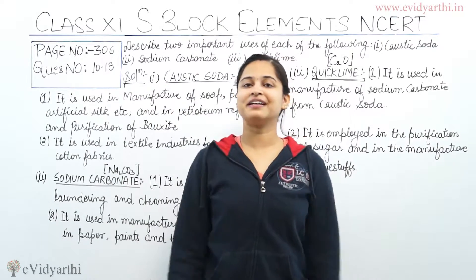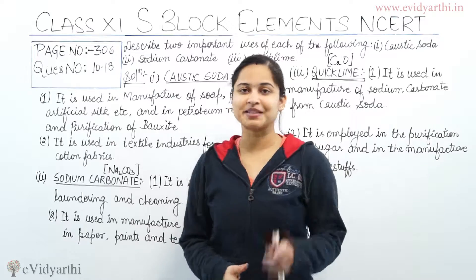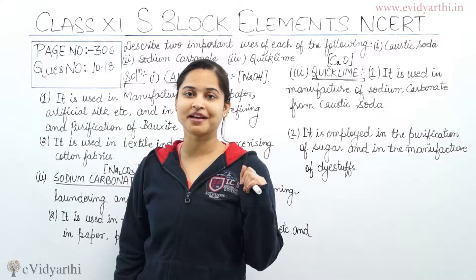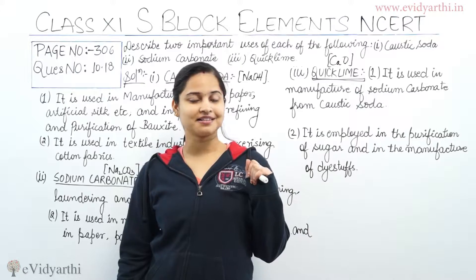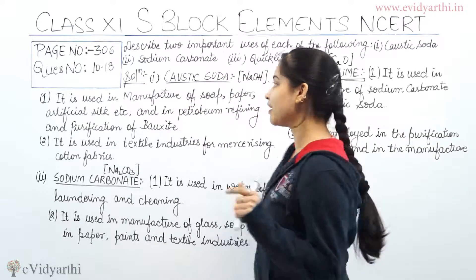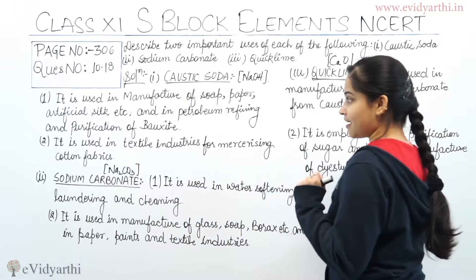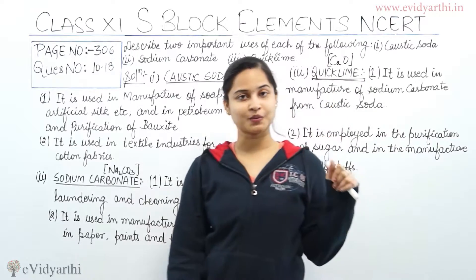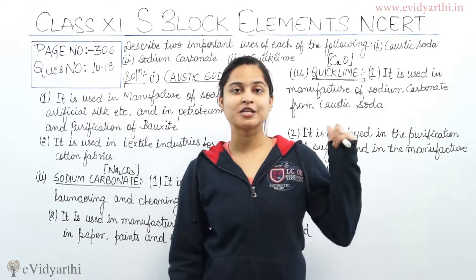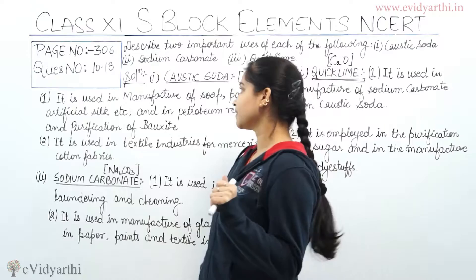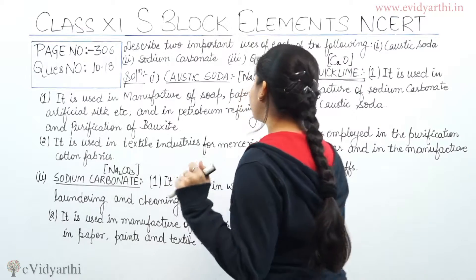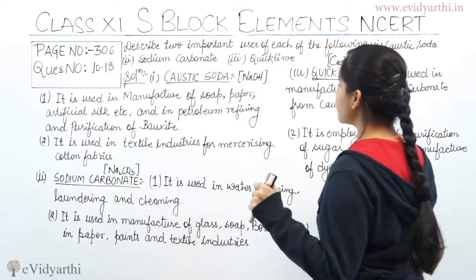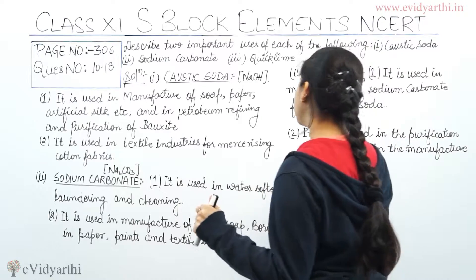Hello everyone, I am Raghi and I am back with another question of chapter number 10, S-block elements, in CBSE Class 11. In this video, I will make you understand question number 18, which is on page number 306. The question is: describe the two important uses of each of the following — caustic soda, sodium carbonate, and quicklime.